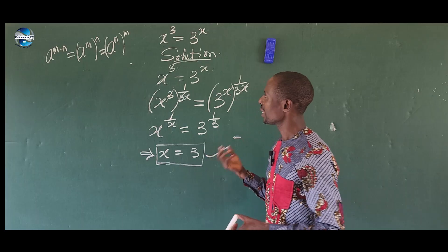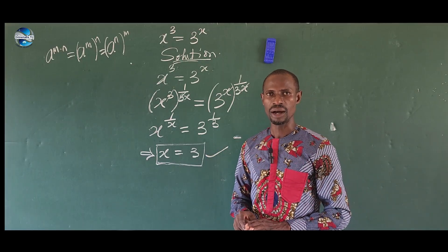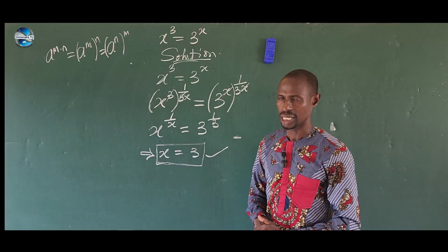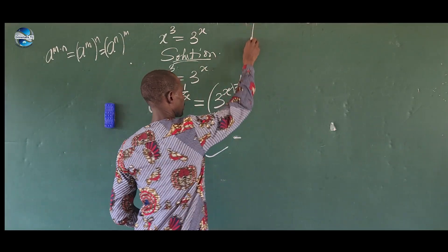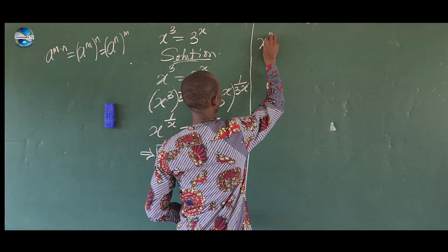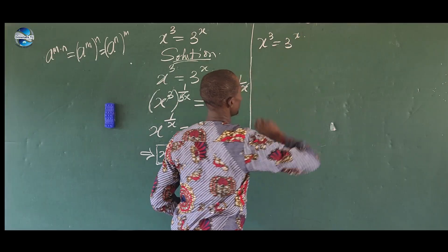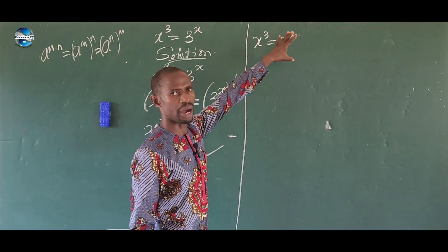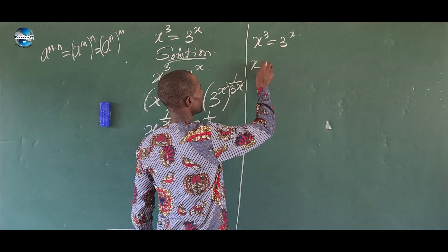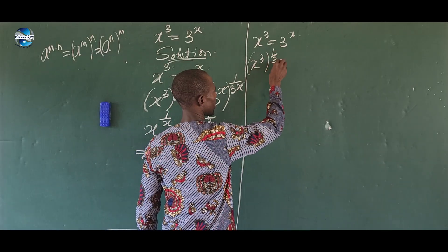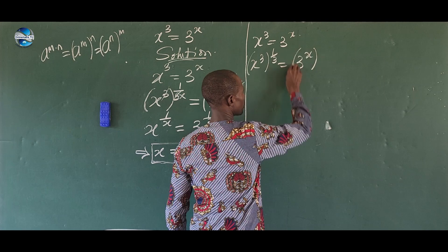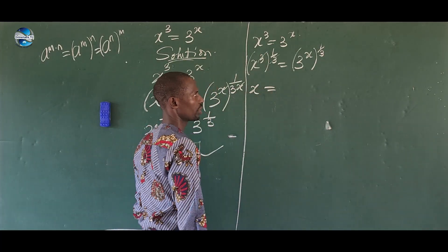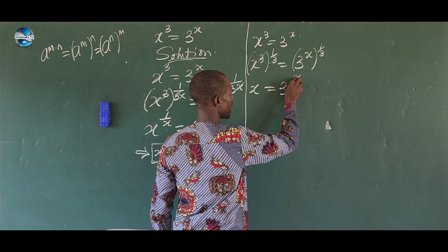Now we want to use the other method, which gives us a solution for infinite numbers of roots to this expression. Starting again from x³ = 3^x, I want to eliminate this 3 by raising both sides to the power of 1/3. This gives x³ raised to 1/3 equals 3^x raised to 1/3, simplifying to x = 3^(x/3).